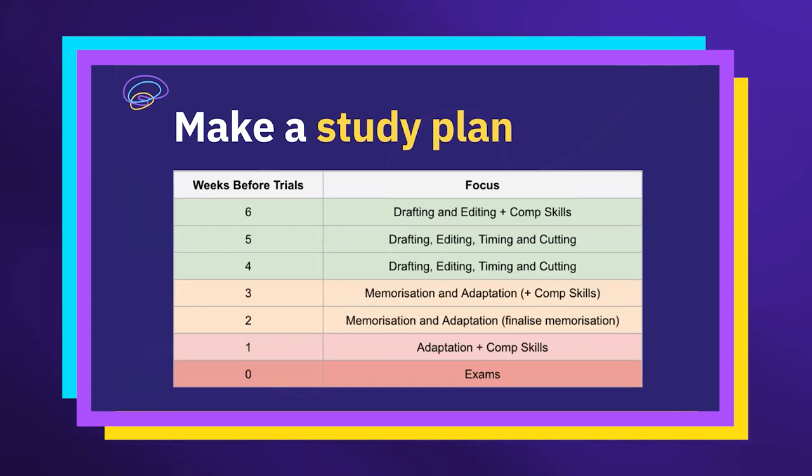I'm obviously going to do some section one practice in that week as well — comprehension, the section one of the common mod, the reading task. I want to be chipping away at that for a few weeks leading up to the exam, doing it in small doses throughout to keep sharp and constantly practicing different types of questions to get really fast at writing those responses. You need to identify techniques quickly, and section one of paper one is the trickiest section in terms of timing. It's really hard to do in 45 minutes even with 10 minutes reading time. Don't leave that to the last week.